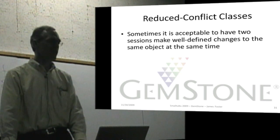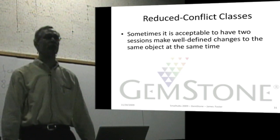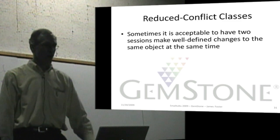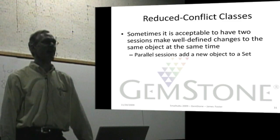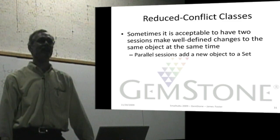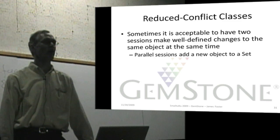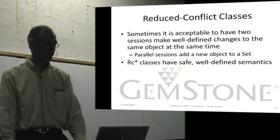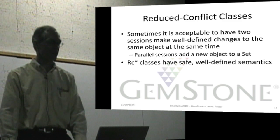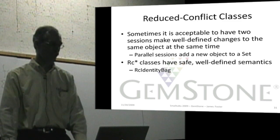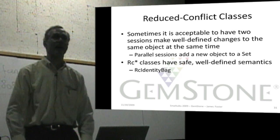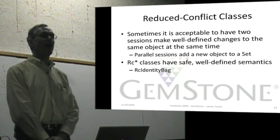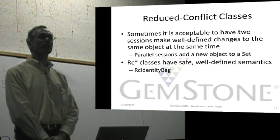There are times when it's acceptable to have multiple changes to the same object. For example, if you have a set or a bag, and multiple sessions are adding separate objects to a collection — to a set where order by definition is not important — then having multiple sessions add should be acceptable. GemStone has what's called reduced conflict collections that are safe if you use them in well-defined ways. An RC identity bag allows multiple sessions to add objects; if they add the same object, it will be added twice.